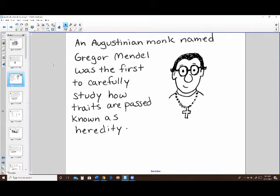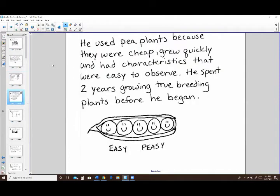He was an Augustinian monk. He was a high school biology teacher. He was an avid gardener and he was the first person to really study how these traits were passed on, which is a concept known as heredity. He chose to use pea plants because pea plants are pretty easy to grow. You can grow them very quickly and they have characteristics that were easy to observe. So for example, they produce white flowers or purple flowers. They produce green peas or yellow peas. They can be tall or they can be short.